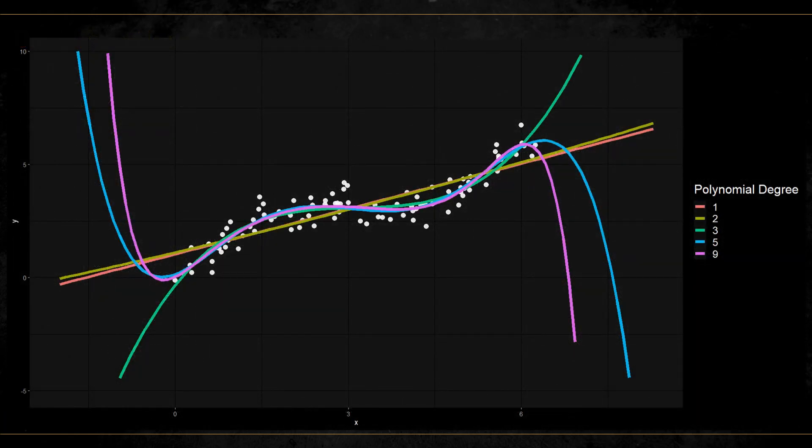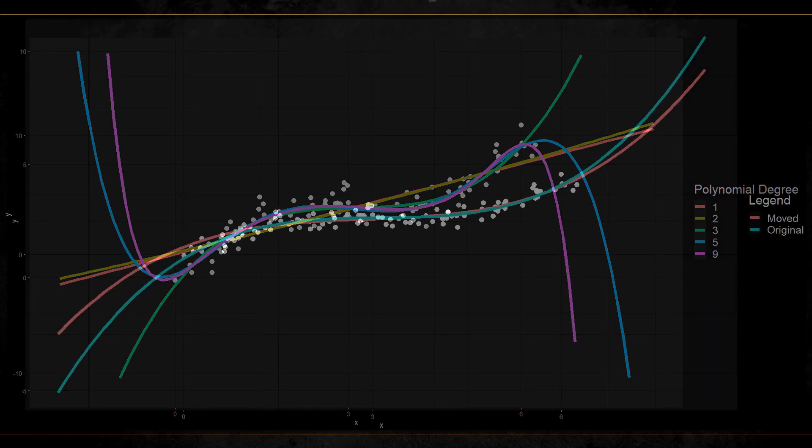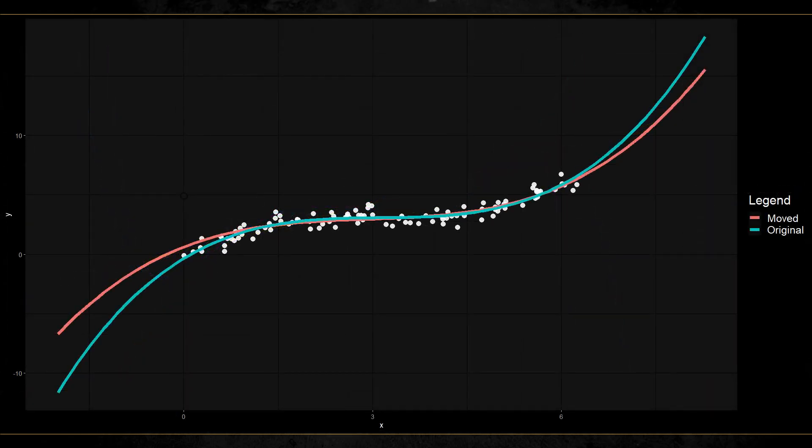Here you can see some data and different global polynomials fitted to it, from just a linear term all the way to 9th degree polynomial. Here I focus on the 3rd degree polynomial. What happens if I move a point in the left side of the scatter plot? We can see that the new fit is different, but not only on the left side, also on the right. This is the problem with having global basis functions.